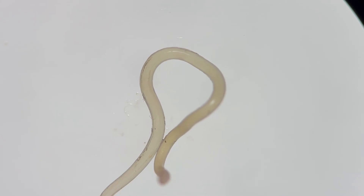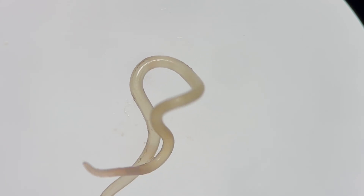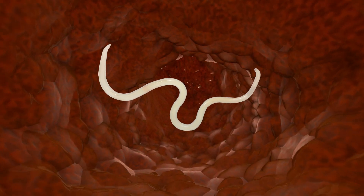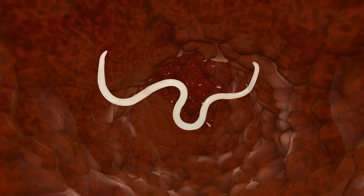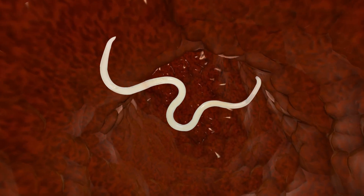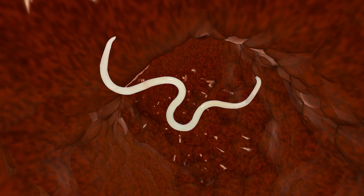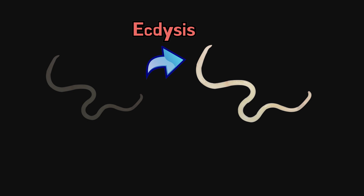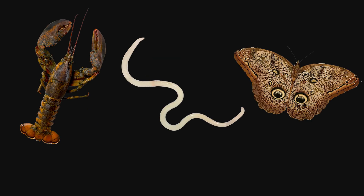Anisakis's epidermis is composed of a collagenous cuticle making up its outer layer. Thanks to this thick epidermis it can survive as a parasite in the digestive tracts of other creatures without being digested. Moreover, Anisakis undergoes growth through a process called ecdysis, similar to arthropods and insects.